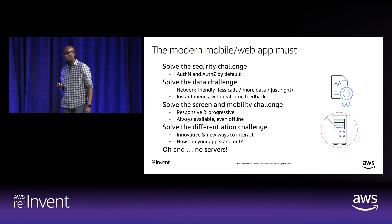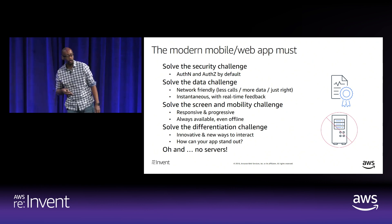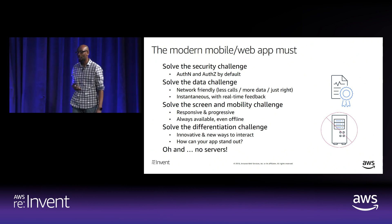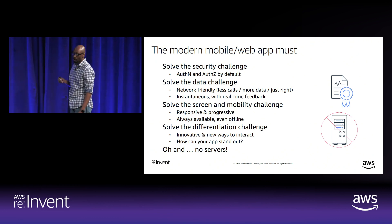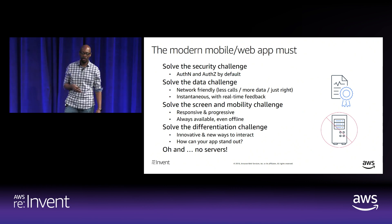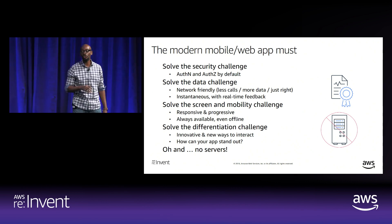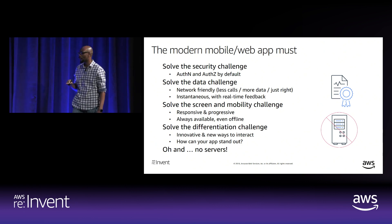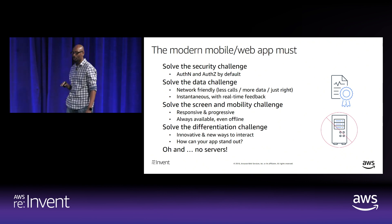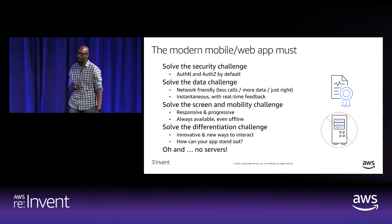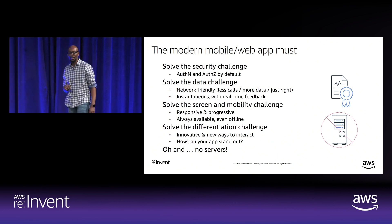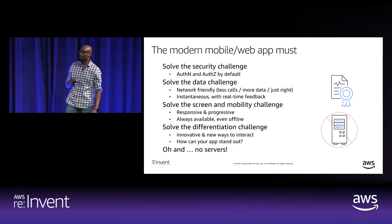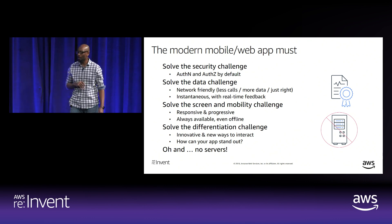In short, mobile web apps today must solve the security challenge by looking at auth and authZ by default. We need to solve the data challenge — make sure that our calls are network-friendly, make sure that data is instantaneous with real-time feedback. We need to solve the screen and mobility challenge — make our app responsive, progressive, available even offline. And we need to solve the differentiation challenge. We don't want to have to deal with servers. This only slows us down.